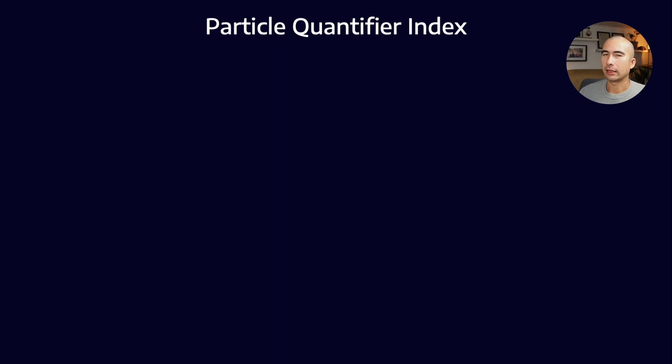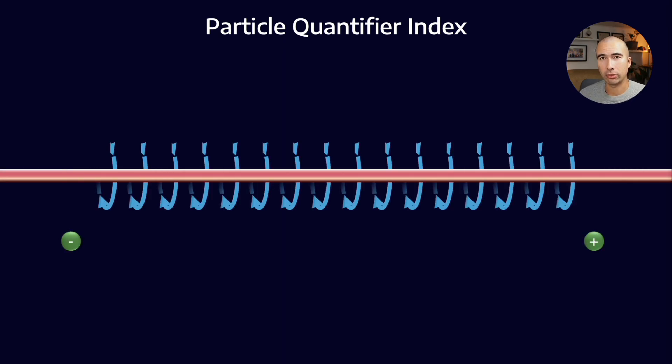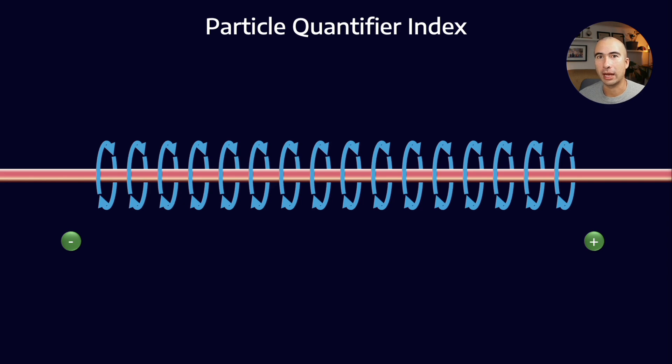Before we start talking about how that's measured, we need to understand a couple of concepts from physics. If we pass a current through a wire, it's going to develop a magnetic field around it according to the right hand rule.